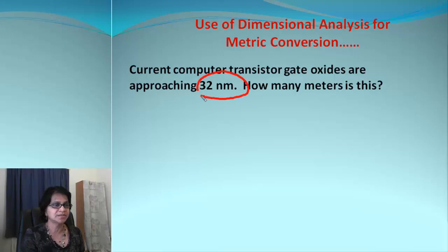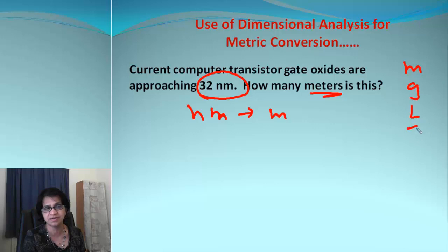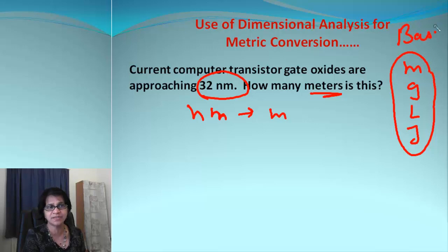We are converting 32 nanometers to meter. So I am going from nanometers to meter. That's my roadmap. Now let me again tell you we have meters, grams, liters and joule. All these are basic units. And when we have basic units, we only need one step roadmap. We don't need to stop over anywhere else. So nanometer to meter is your roadmap.